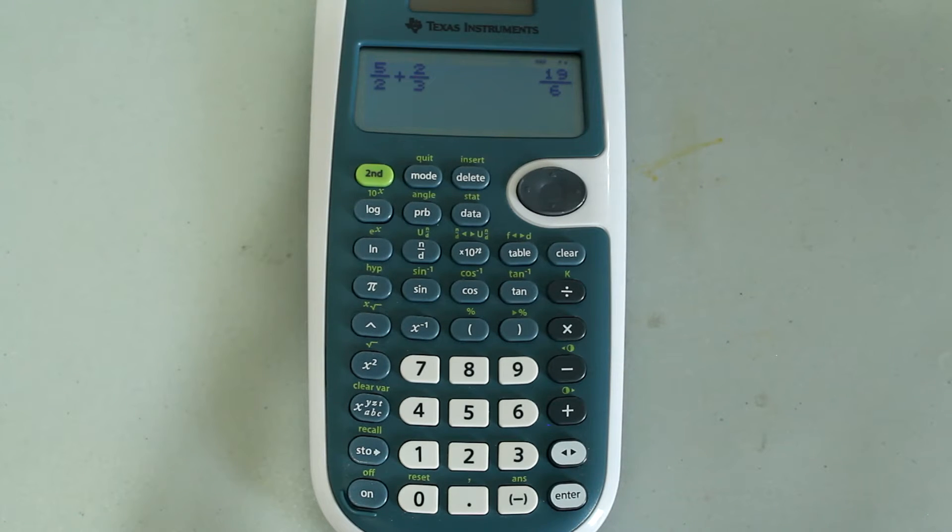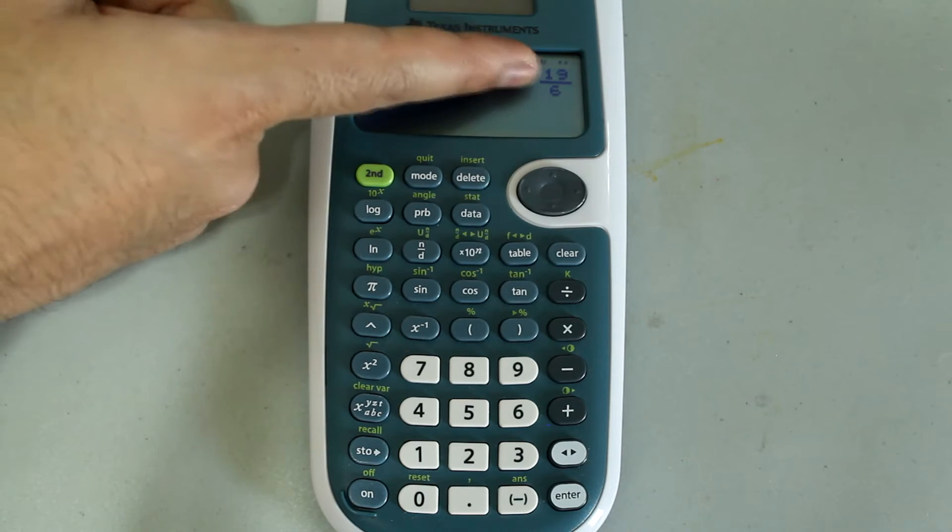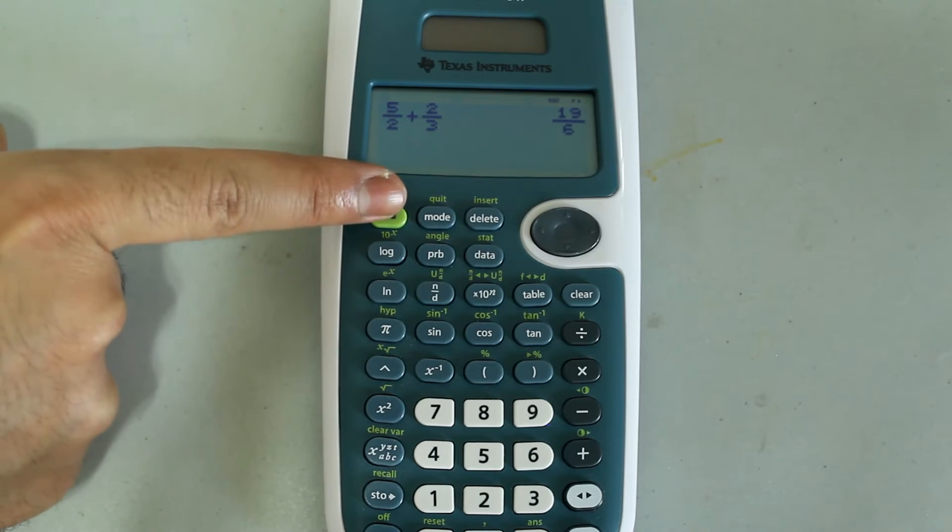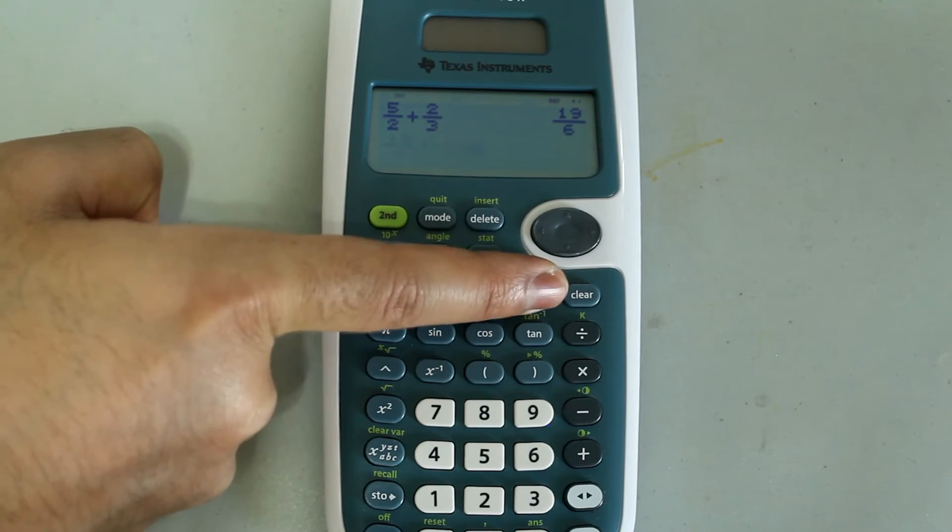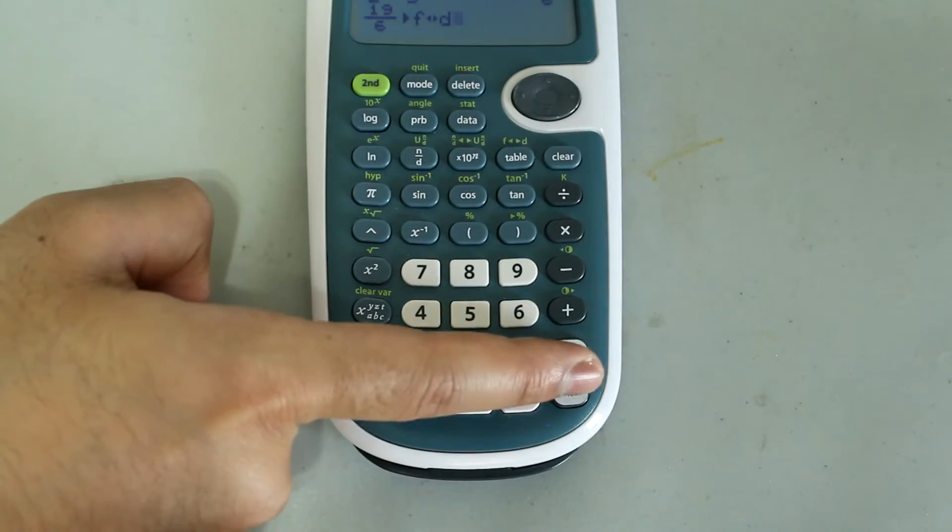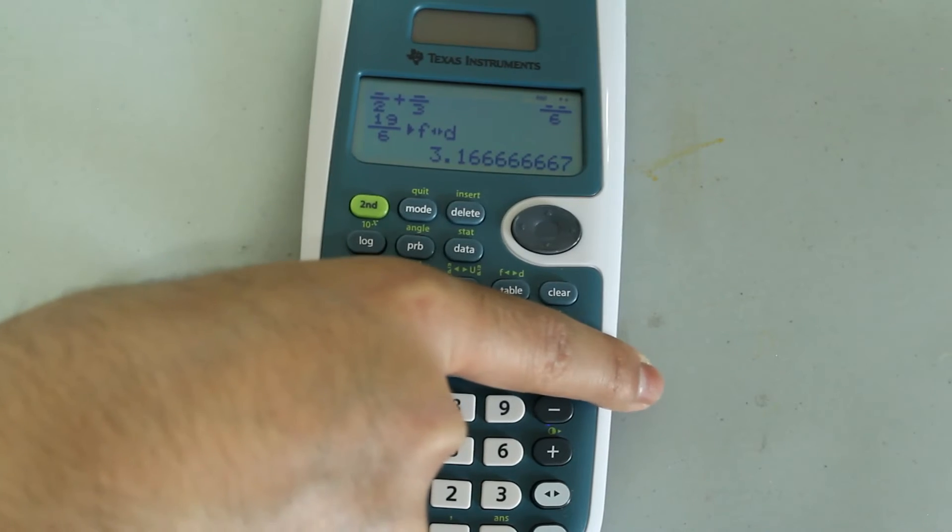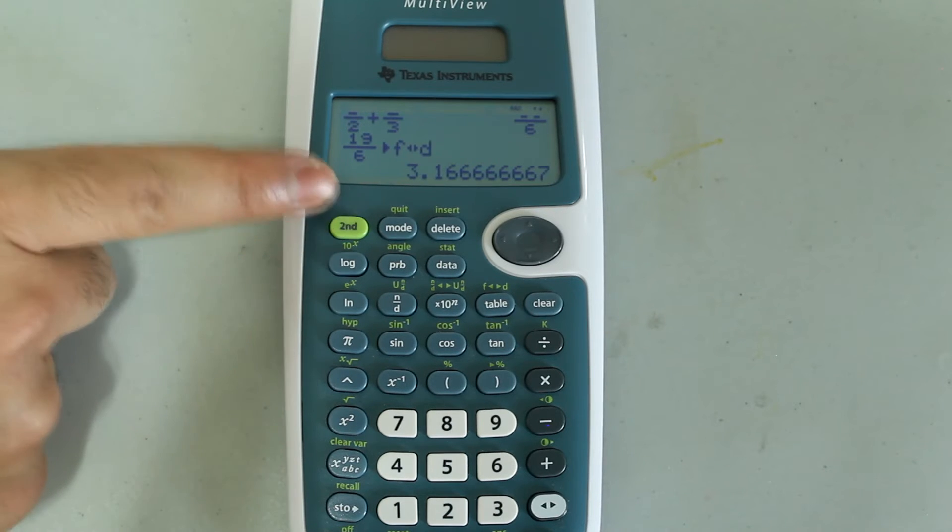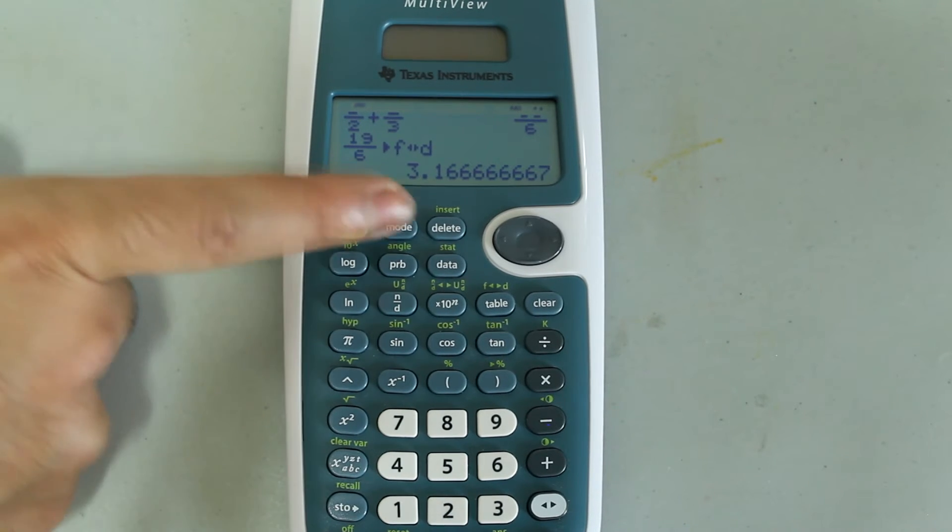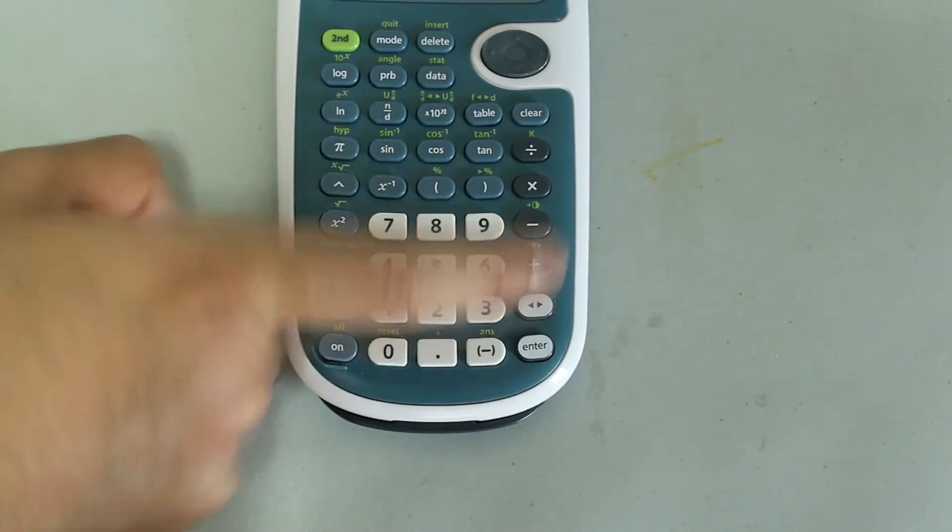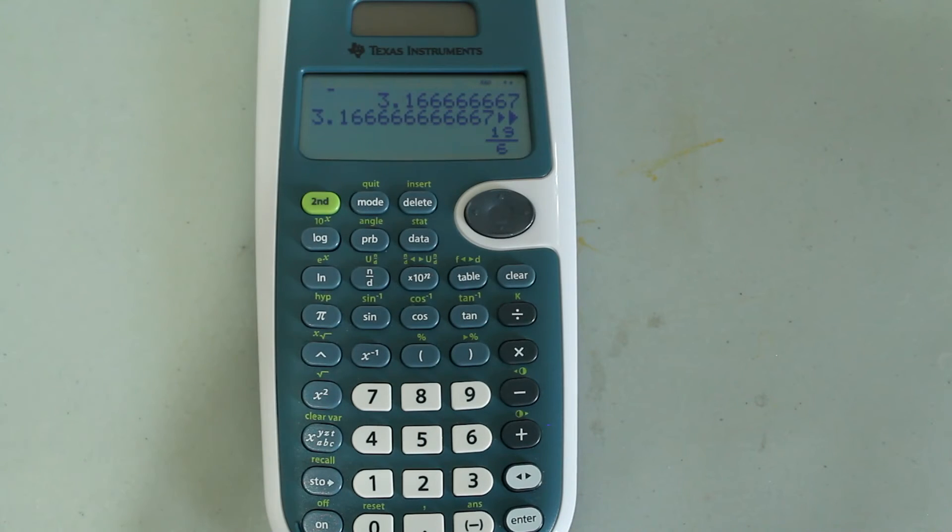If for some reason I wanted this fraction to be converted to a decimal, all I would need to do is press second and the table button, and this comes up on the screen, and press enter, and I get the answer in decimal form. And if I wanted to go back to fraction form, all I would need to do is press second and the table button one more time, and I would go back, after I press enter, I would go back to the fraction form.